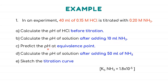We also need to calculate the pH at the equivalence point where the salt is formed, then the pH after adding 50 mL of NH₃, and finally sketch the titration curve. Another piece of information given is the Kb of NH₃, which tells us that NH₃ is a weak species and HCl is a strong acid. So we have a combination of strong acid and weak base forming an acidic salt.